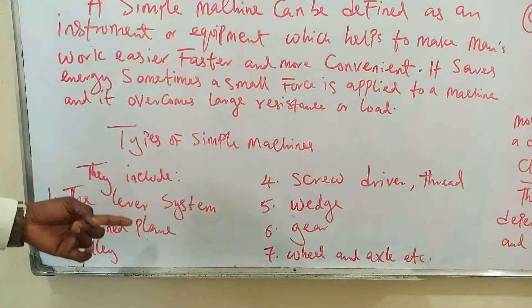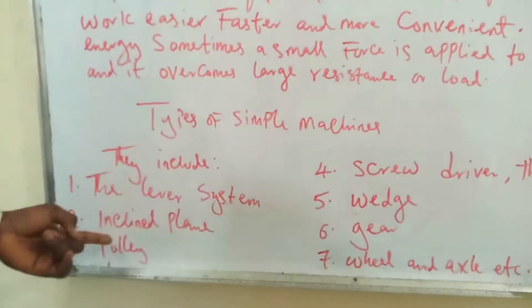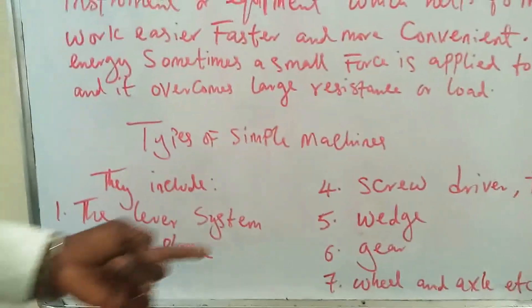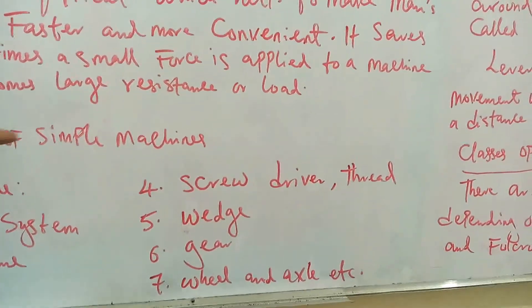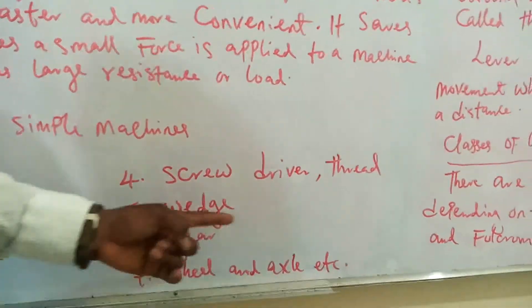Types of simple machines include the lever system, incline plane, pulley, screw, screwdriver and tread, wedge, gear, wheel and axle, etc.